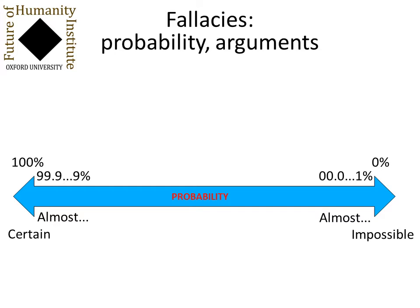I'll argue later that actually the difference between certainty and almost certainty is indeed very small. Things that are certain are things like 2 plus 2 equals 4 or energy conservation in modern physics. Things that are almost certain are the fact that you won't win the lottery — especially if you haven't bought a ticket, but even if you have, the odds against you winning are huge.